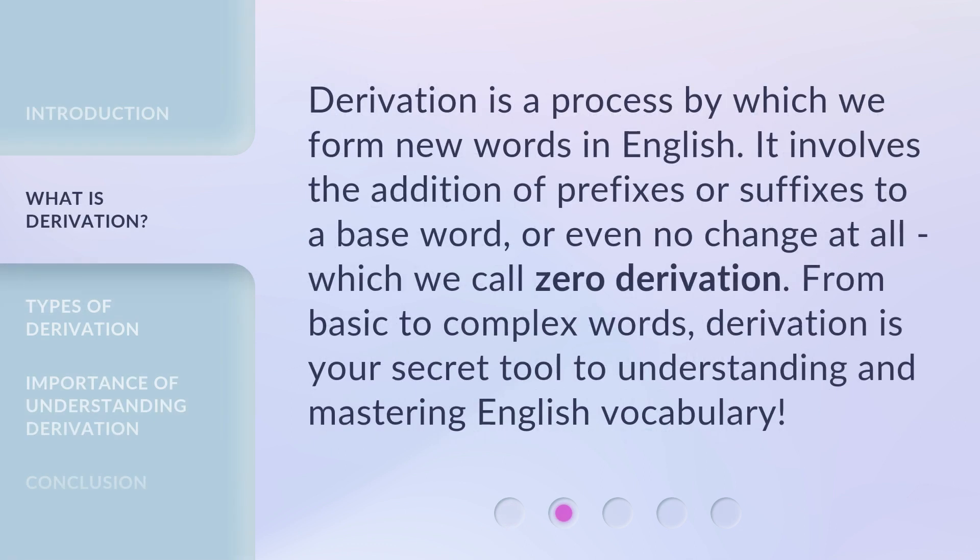Derivation is a process by which we form new words in English. It involves the addition of prefixes or suffixes to a base word, or even no change at all, which we call zero derivation. From basic to complex words, derivation is your secret tool to understanding and mastering English vocabulary.